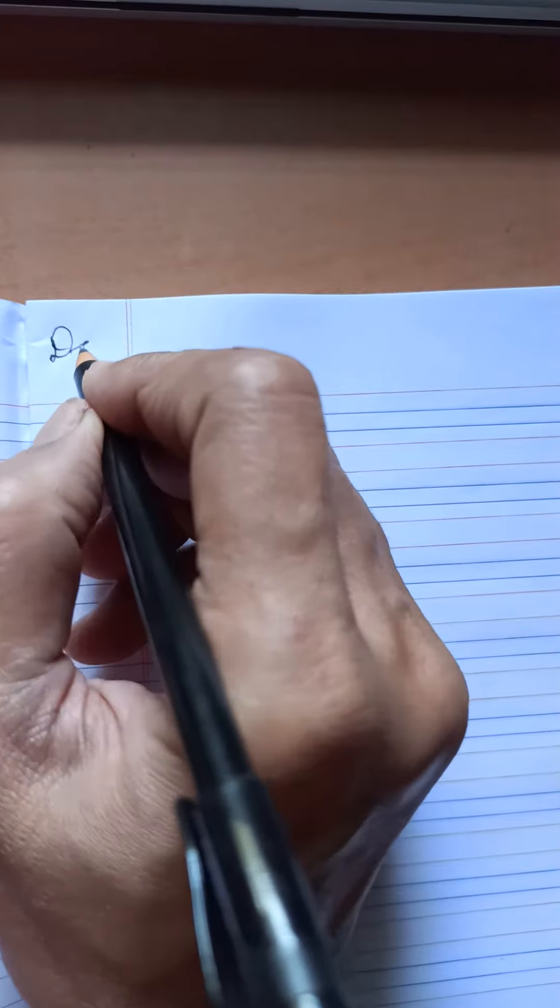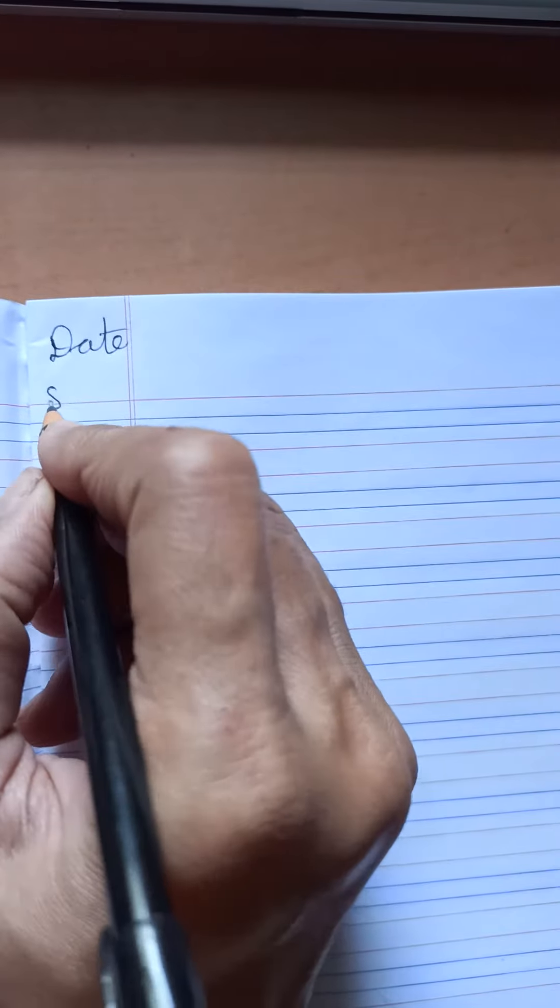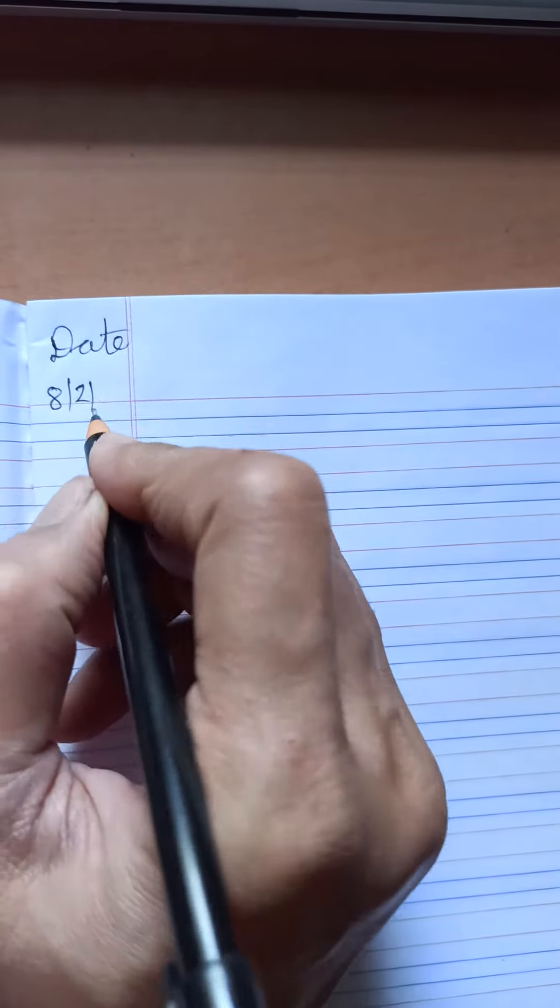Good morning children. This is your EVS notebook. First of all write today's date, date is 8th February 2021.